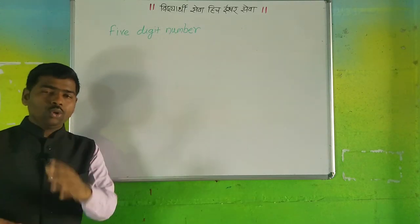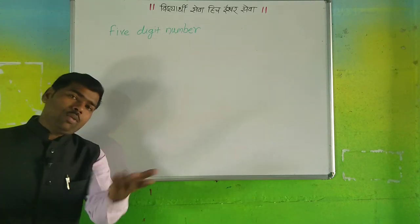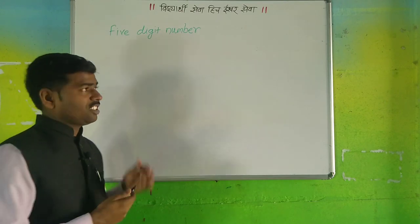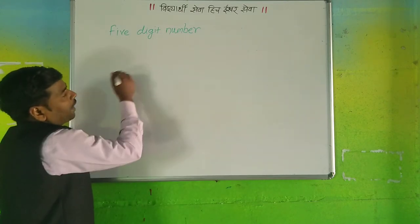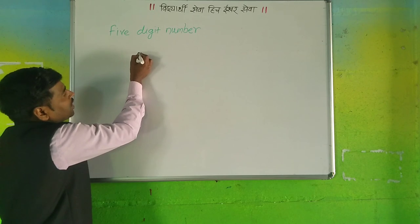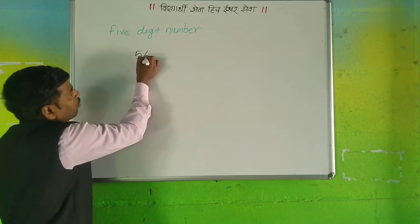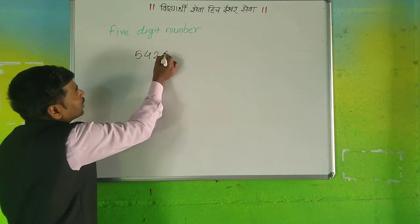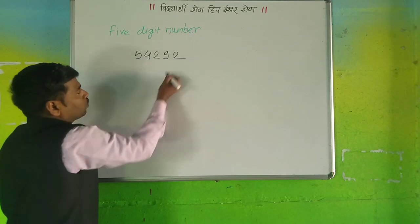As you know four digit numbers — today we are going to go one step ahead. That is a five digit number. If there are given five numbers: five, four, two, nine, and two.